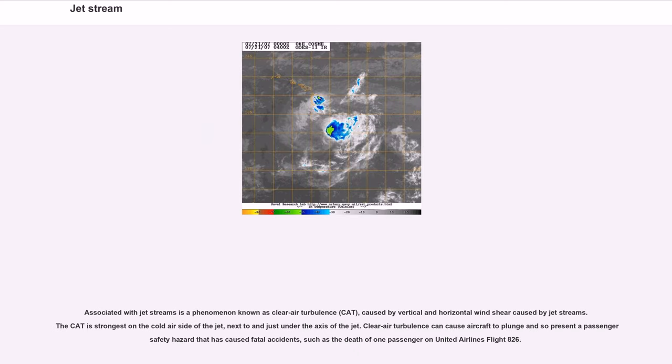Associated with jet streams is a phenomenon known as clear air turbulence (CAT), caused by vertical and horizontal wind shear caused by jet streams. The CAT is strongest on the cold air side of the jet, next to and just under the axis of the jet. Clear air turbulence can cause aircraft to plunge and so present a passenger safety hazard that has caused fatal accidents, such as the death of one passenger on United Airlines Flight 826.